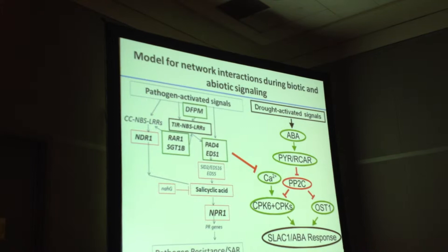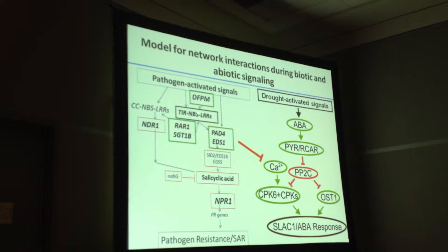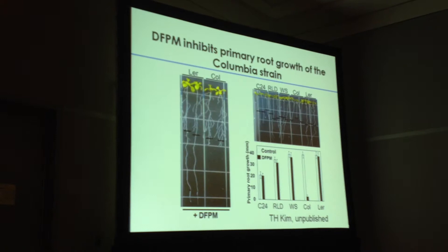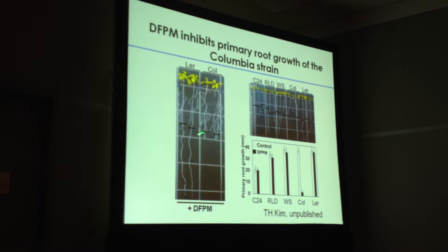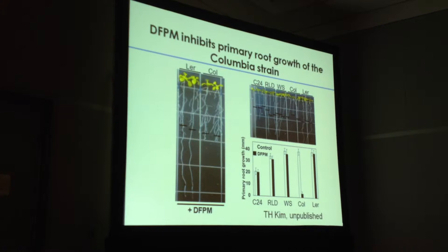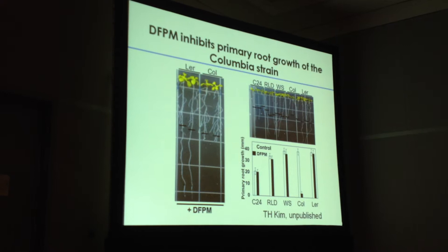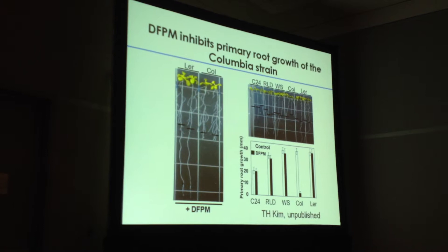Tae-hoon, through elegant studies, identified a specific NLR required for the DFPM response by identifying another phenotype of DFPM. In the Colombia ecotype, exposing roots or seedlings to DFPM rapidly inhibits primary root growth — but not in Landsberg, showing natural variation. Tae-hoon showed this is due to a major QTL on chromosome 5 and was able to identify the gene.